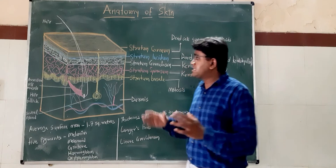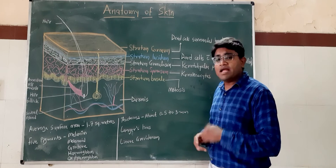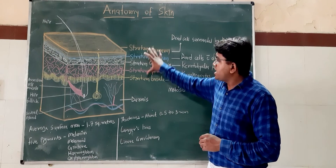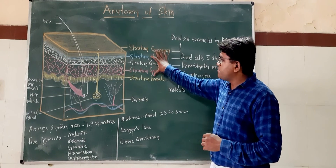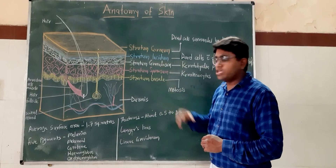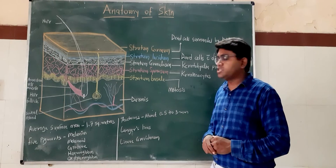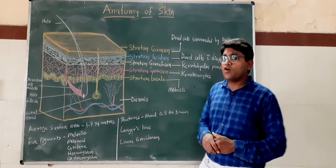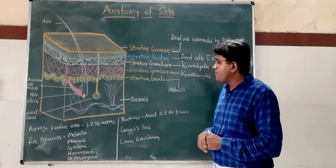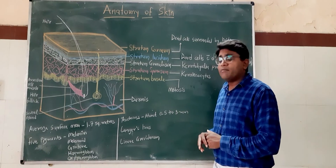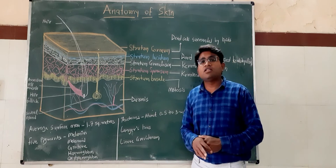Now we will discuss about the layers of the skin. The skin has two main layers: first is the epidermis and the second one is the dermis. The epidermis is ectodermal in origin, whereas the dermis is mesodermal in origin. The epidermis is formed by stratified squamous epithelium, whereas the dermis is formed by connective tissue and it rests on the subcutaneous tissue.